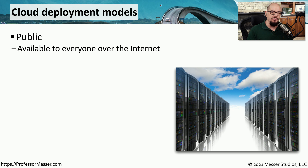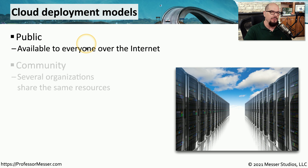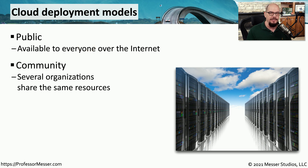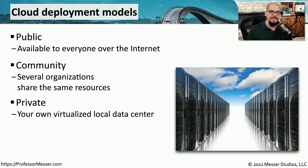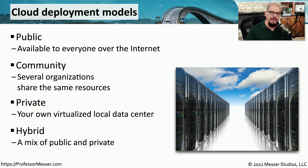There are different types of models that you can use to roll out these cloud-based applications. One is a public model, where everyone anywhere on the internet would be able to gain access and use your cloud-based system. You could also have a cloud-based infrastructure that was community-based, where multiple organizations with a similar goal pool their resources together. Or perhaps you want to take advantage of cloud-based technologies inside of your own data center — in that case, it would be a private cloud. And a mix of public and private, which is extremely common in most organizations, would be considered a hybrid model.